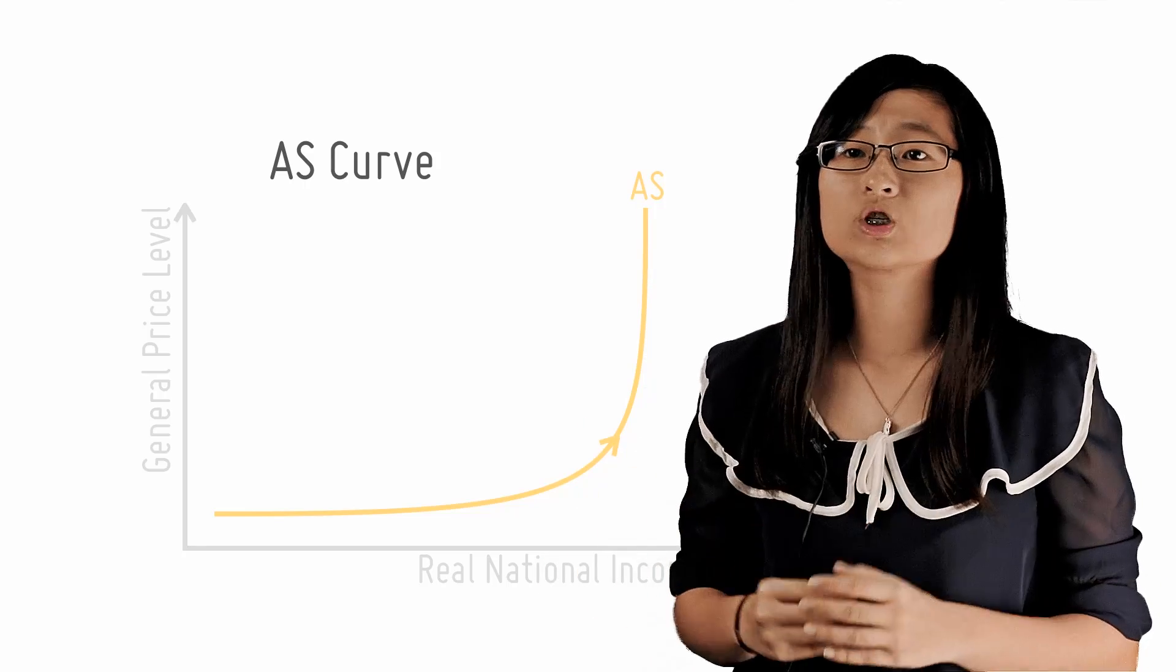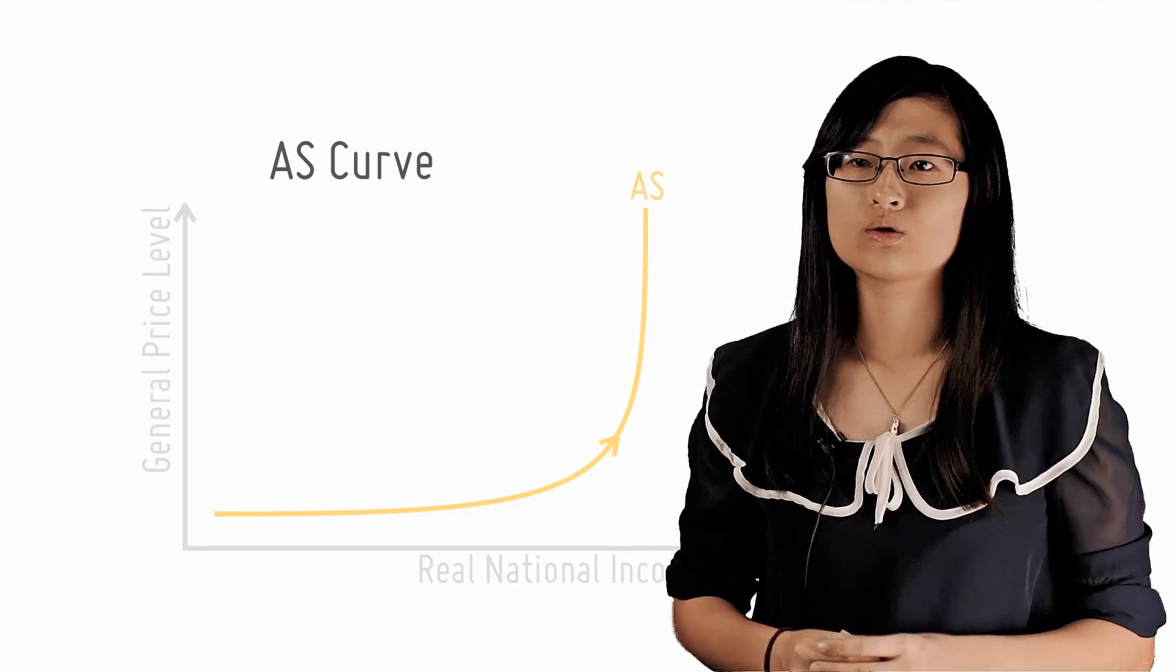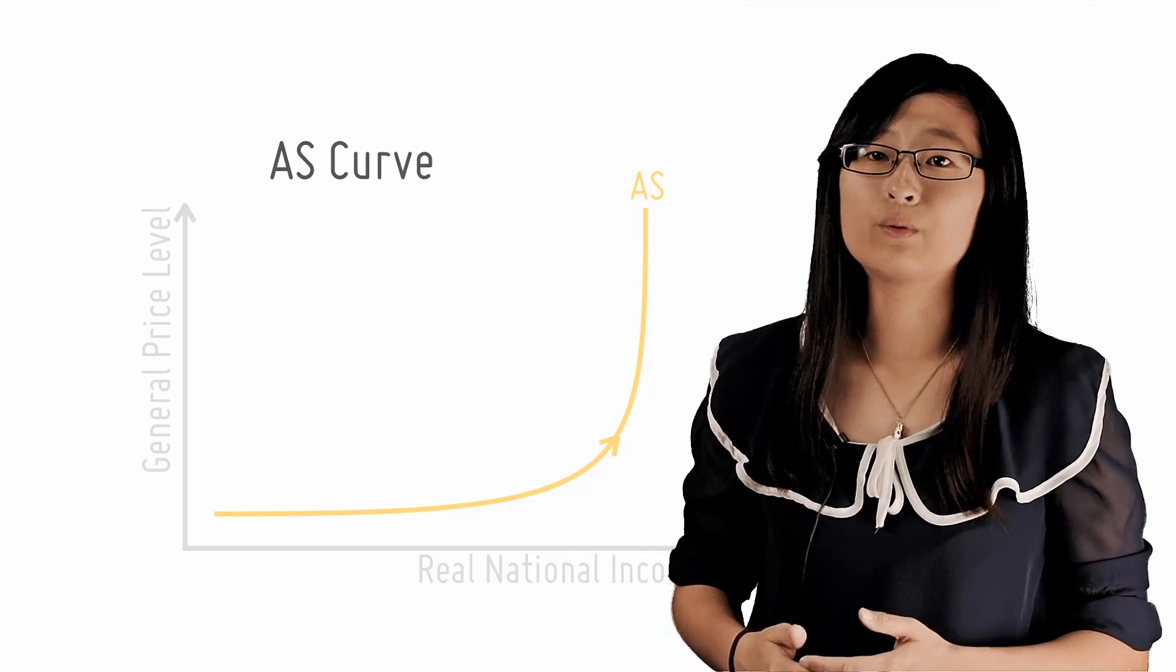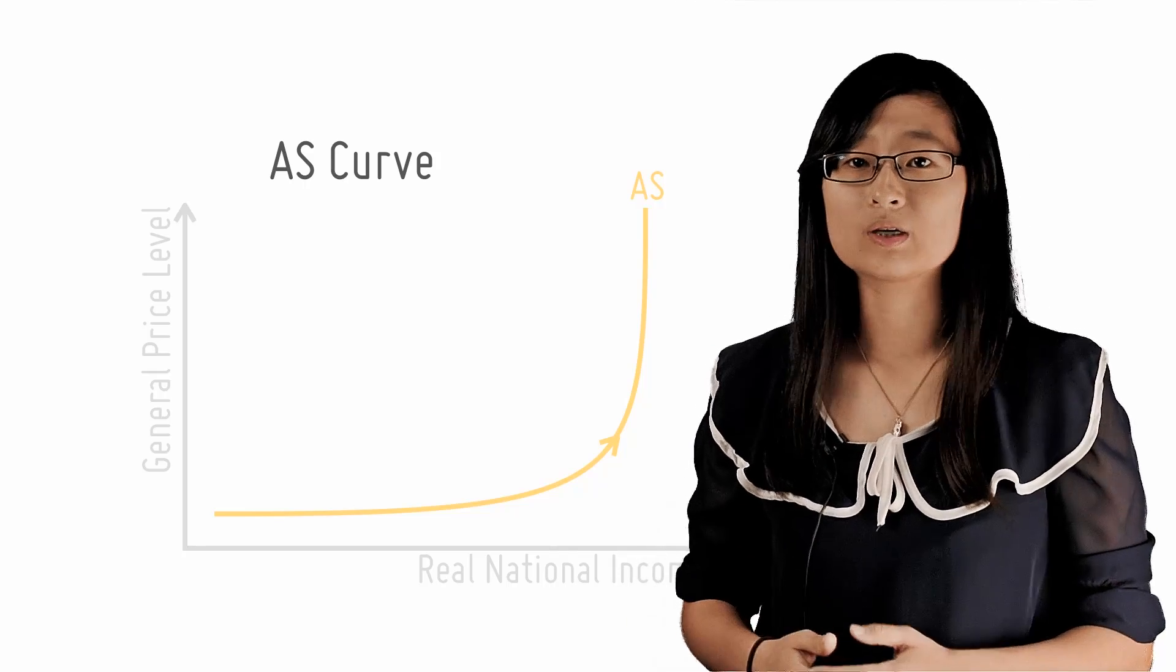And the curve that's connecting the two regions is the intermediate range. Since the curve here is upward sloping, increases in AD result in both increases in national output and increases in the general price level.